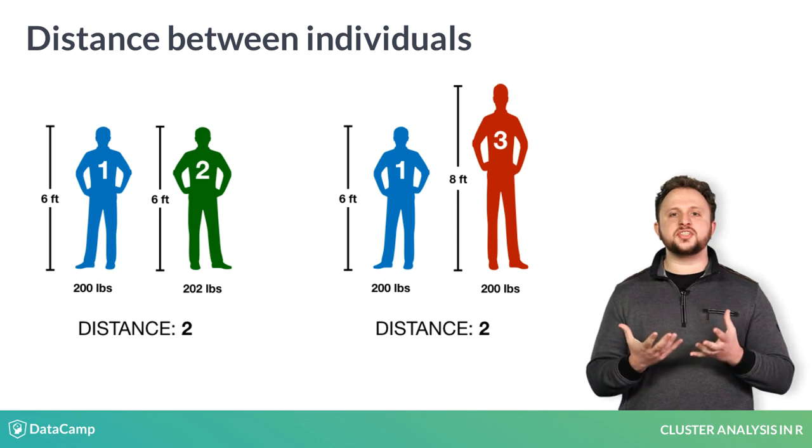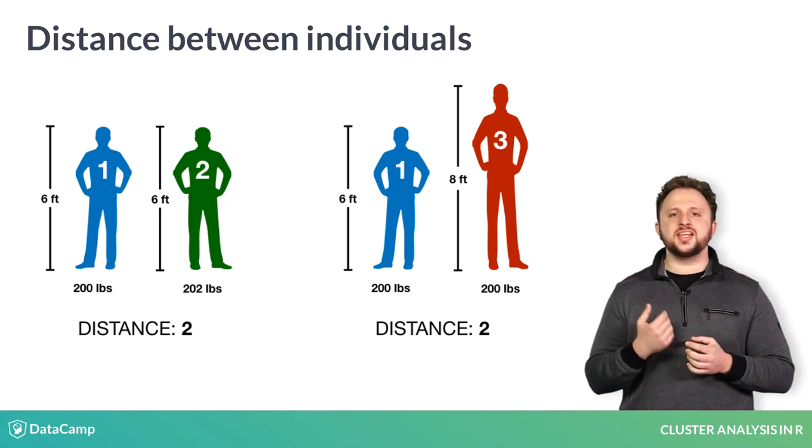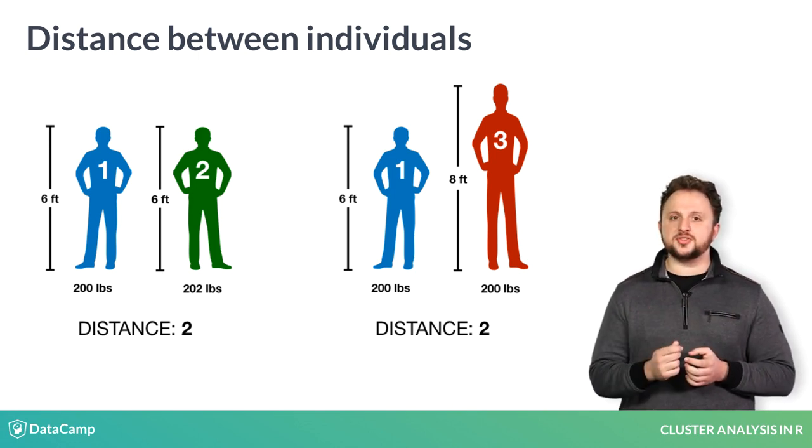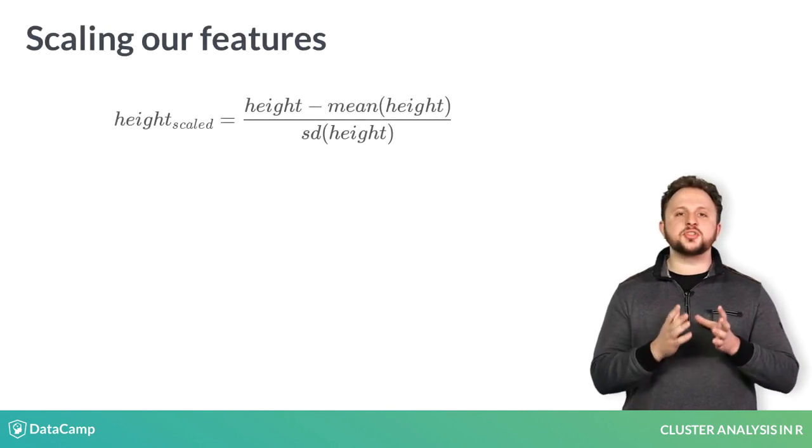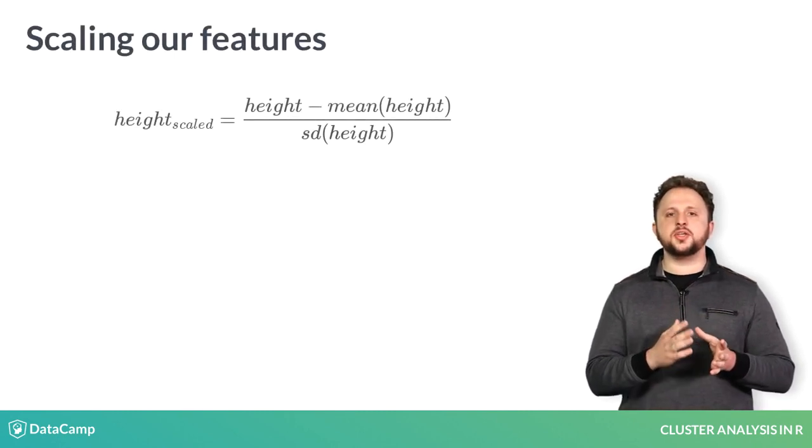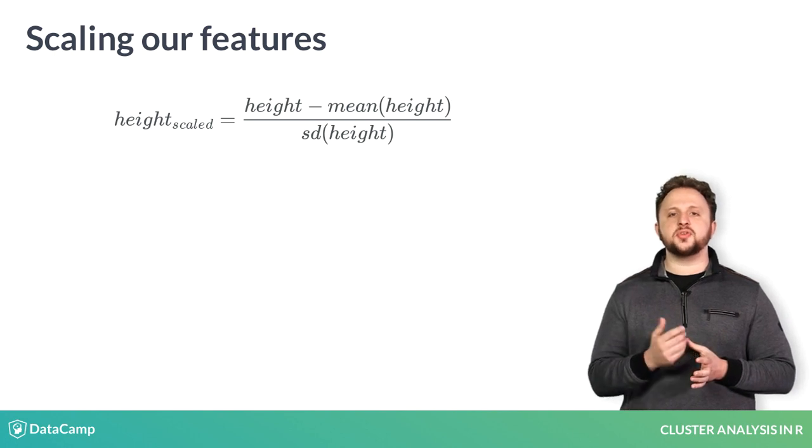So, how can we adjust these features to calculate a distance that better aligns with our expectations? To do this, we need to convert our features to be on a similar scale with one another. There are various methods for doing this, but for this course, we will use the method called standardization.